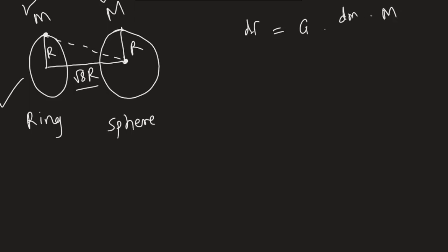dm is this small particle on the ring with mass dm. Capital M is the mass of the sphere divided by the distance between their centers.